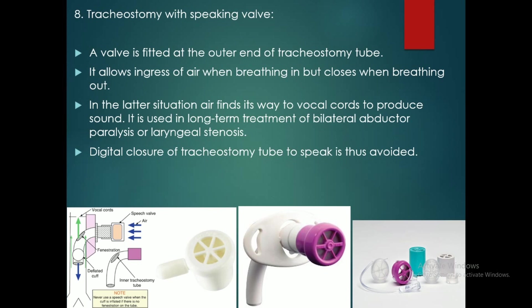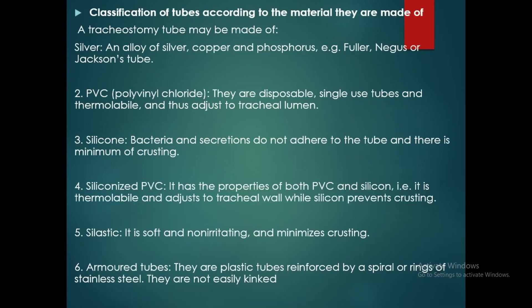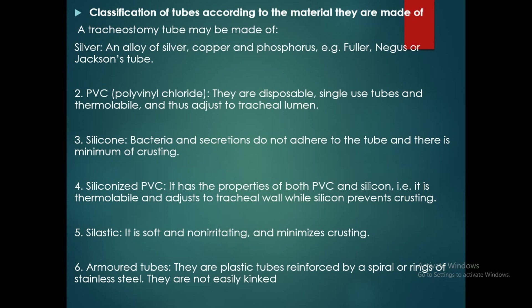Classification of tubes according to the material they are made of: tracheostomy tubes may be made of silver — an alloy of silver, copper, and phosphorus — for example, Fuller's tube, Negus, or Jackson's tube. Polyvinyl chloride tubes are disposable, single-use tubes that are thermosensitive and thus adjust to the tracheal lumen.